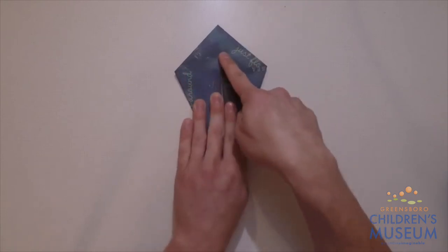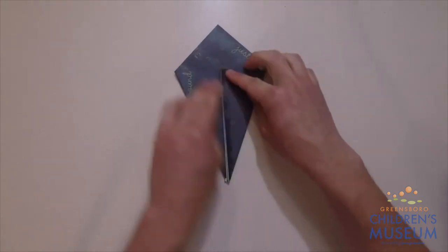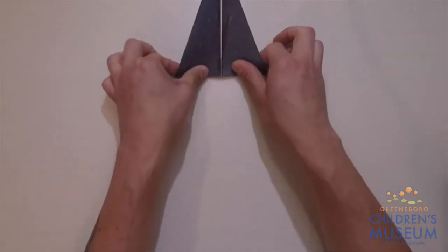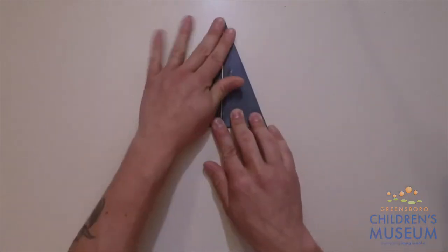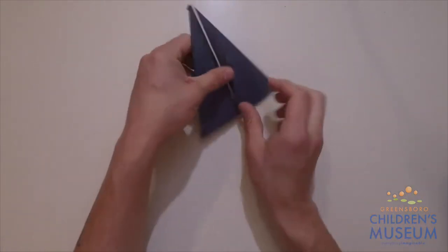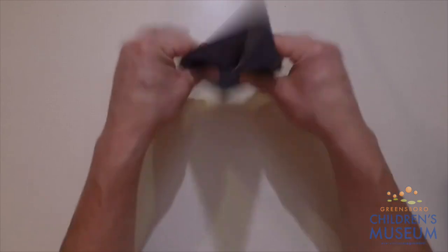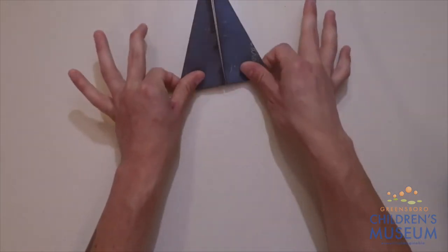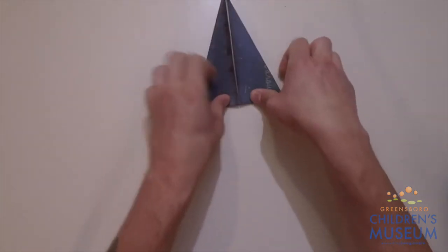Now we have this triangle part right here. We'll flip it so we have this, and then we'll do it again. Unfold it, tuck it under, and you're going to flip again.